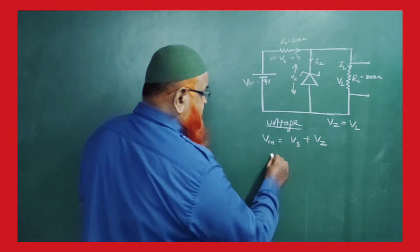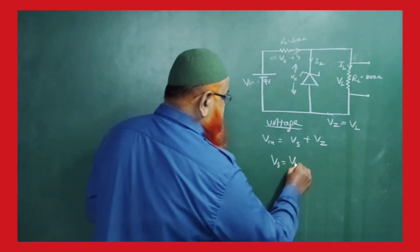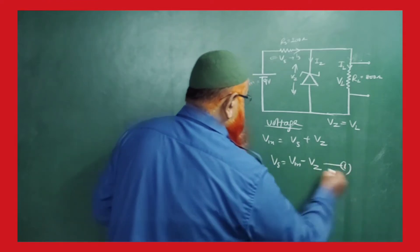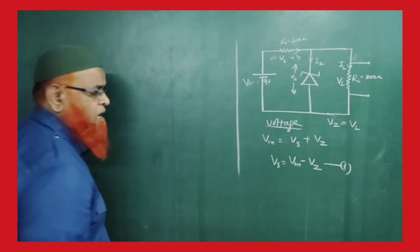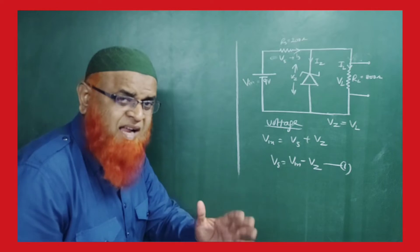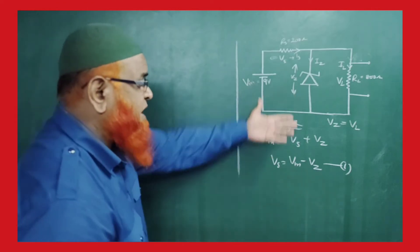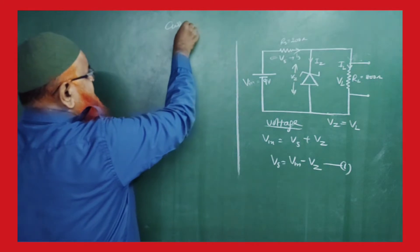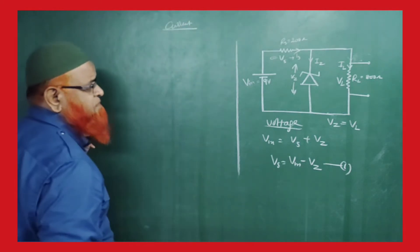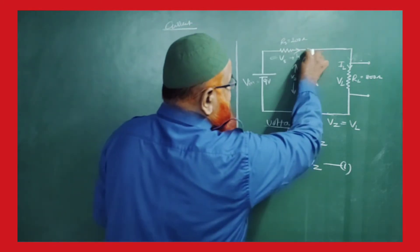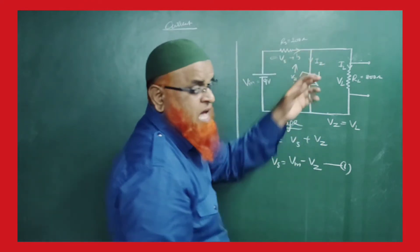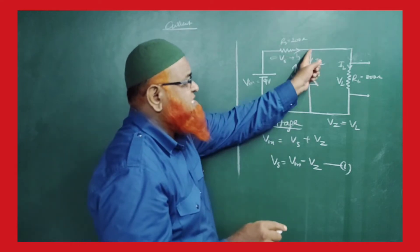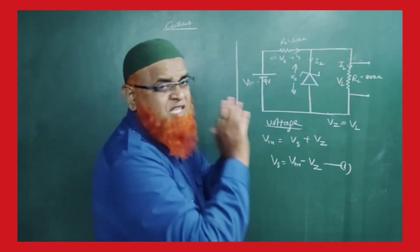Therefore, the voltage across the series resistance is Vin minus Vz — remember this. Now let us discuss the currents in the Zener diode circuit. The series current Is passes through the series resistance and then gets divided into two parts at the junction, because there are two paths for the current to flow.